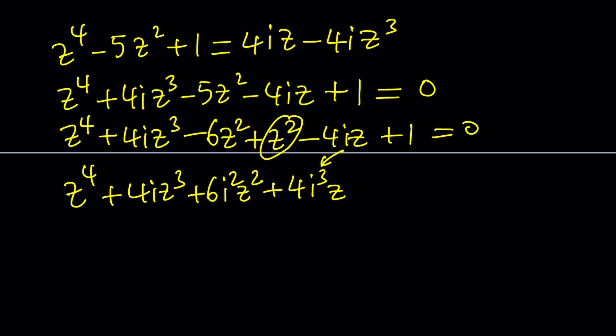I'm going to turn the negative i into an i cubed, so it can be written as 4i cubed z - you know i cubed is negative i. And then the 1 can be written as i to the fourth power. And I have the z squared at the very end, and this equals 0.